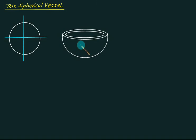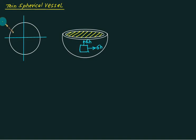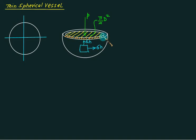If I draw the element here, this stress is the same as this stress, so this is called hoop stress. The pressure acts on this inner area, which equals P multiplied by this area. This area equals π/4 · D². The resisting area is the circumference multiplied by thickness, and you get the stress produced along this direction, which opposes the pressure force along the periphery.